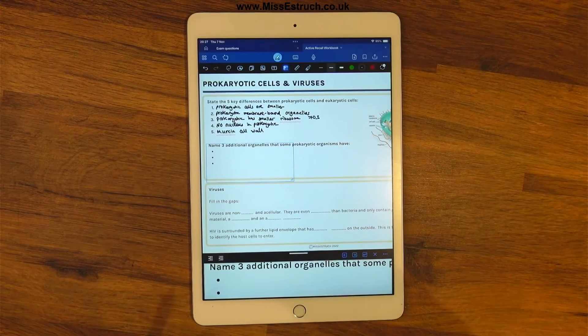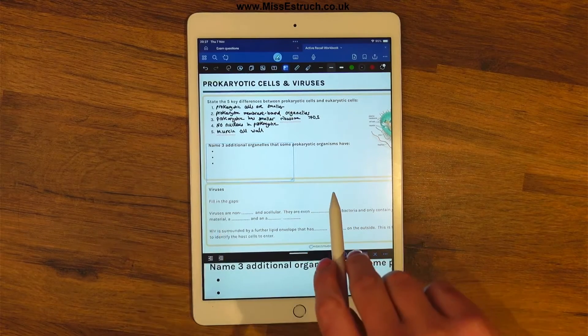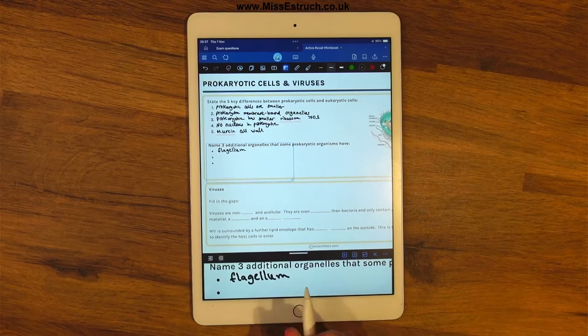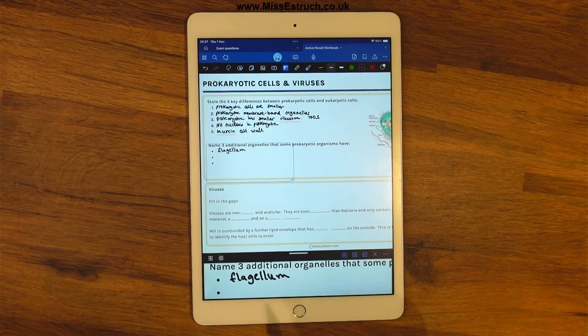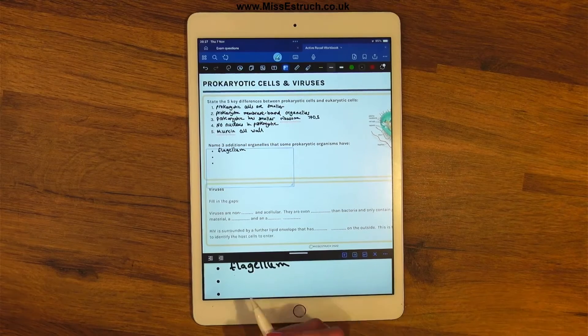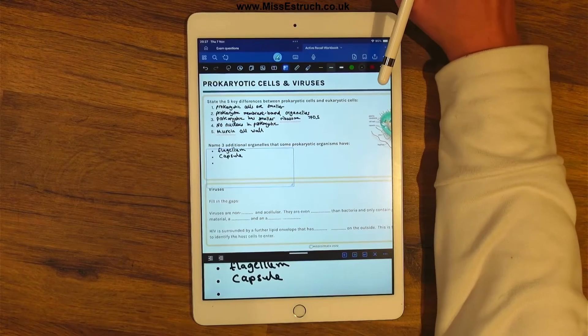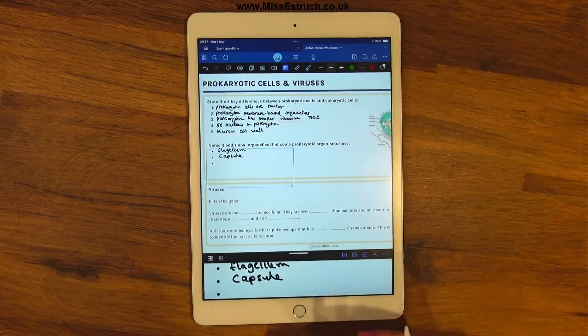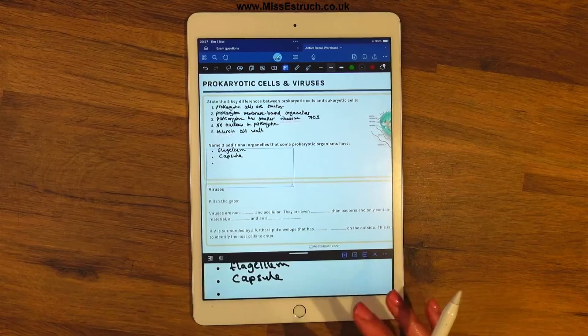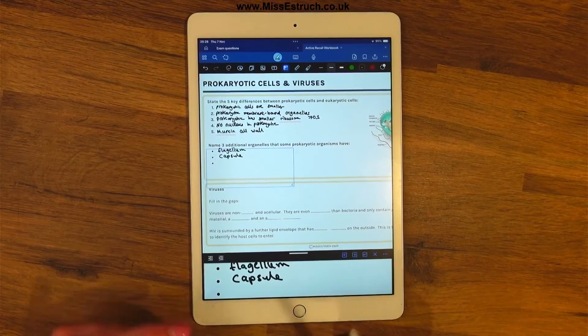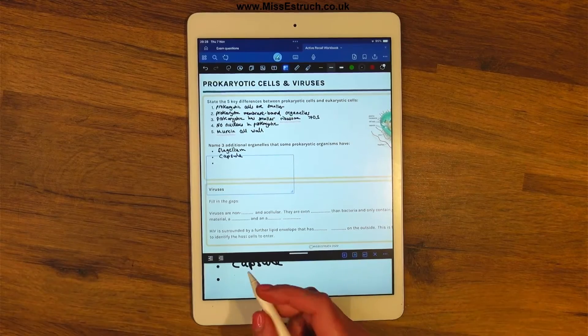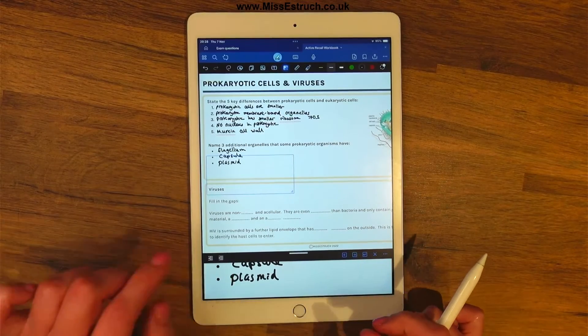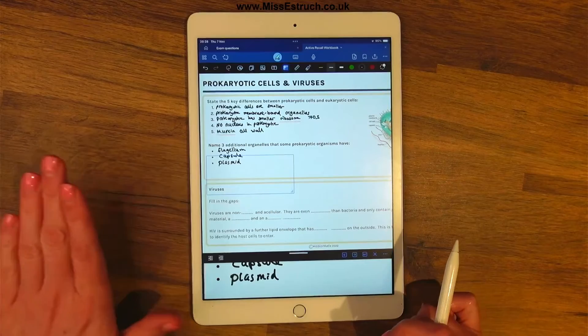So next is naming three additional organelles that only some prokaryotic organisms have. So there are at least three that you need to know that are organelles that you only have in some prokaryotic organisms. So that includes the flagella or flagellum which is like the motorized tail for movement. Then we could also have the capsule, not to be confused with the capsid which is found in viruses. The capsule is the slime layer that you have on the outside of the cell wall which helps prevent desiccation, which means drying out, but also helps to hide antigens to evade the host cell's immune system. And then lastly plasmid. They do actually also sometimes have pili which are a bit like flagella but shorter and that's how they can exchange plasmids between different bacteria.